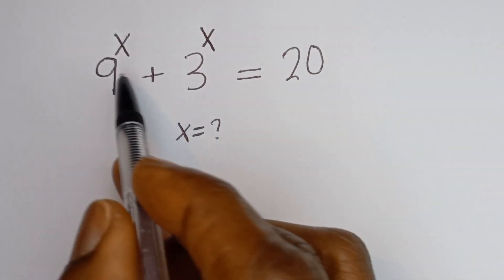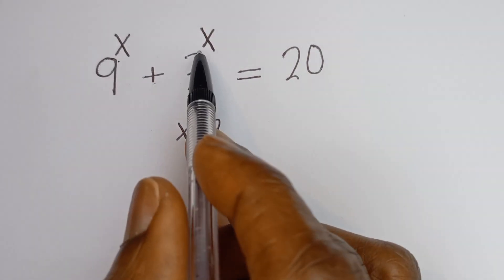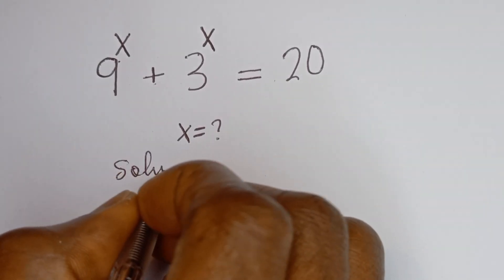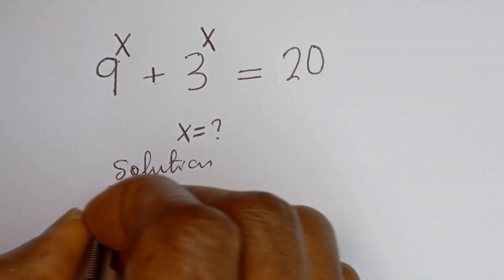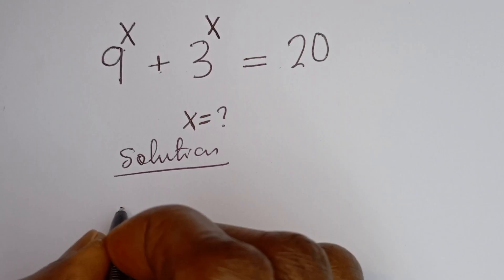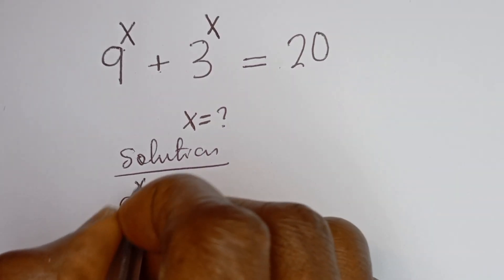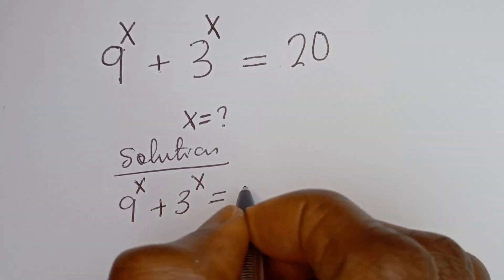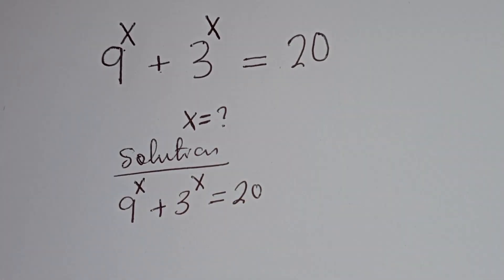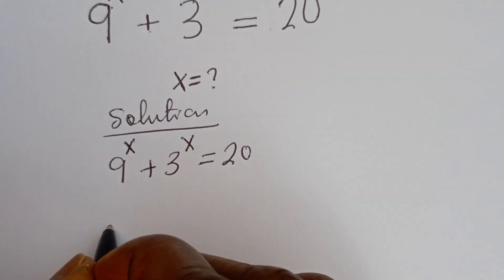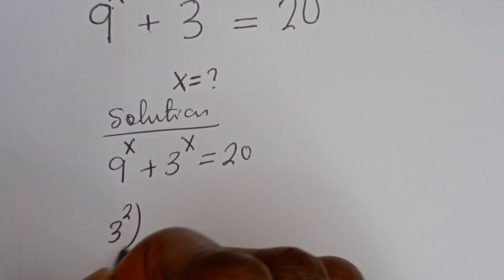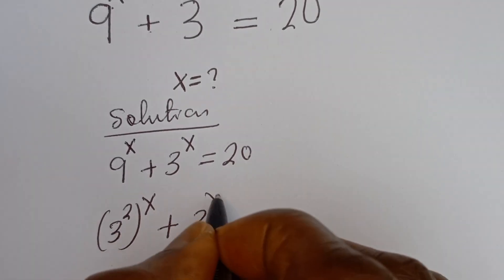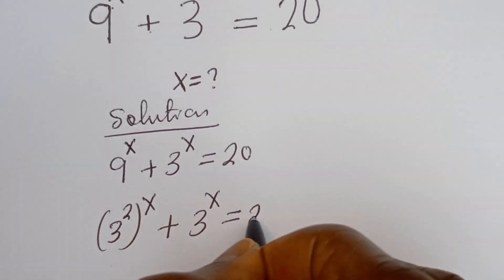Hello. How to solve for x in this equation: 9 to the power of x plus 3 to the power of x is equal to 20. Solution. We have 9 to the power of x plus 3 to the power of x is equal to 20. Then 9 to the power of x can be written as 3 squared to the power of x, plus 3 to the power of x is equal to 20.